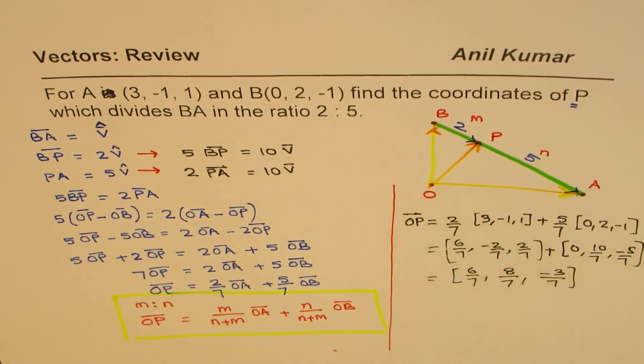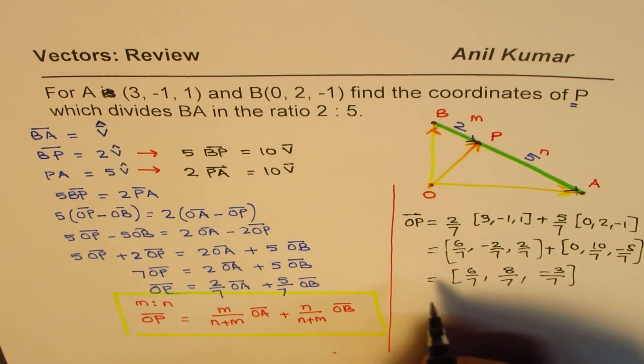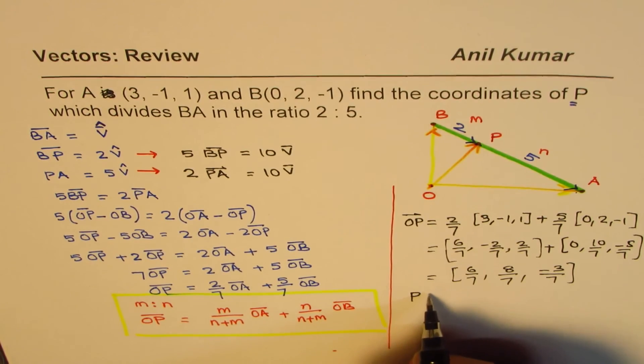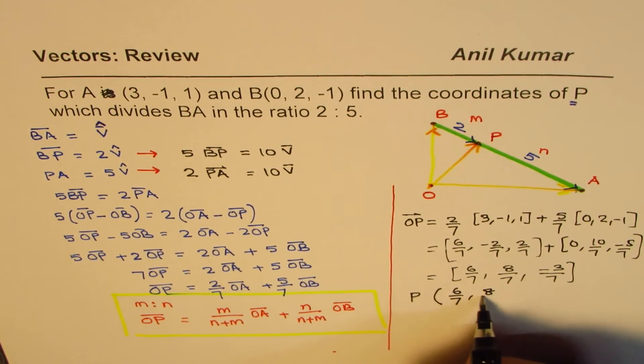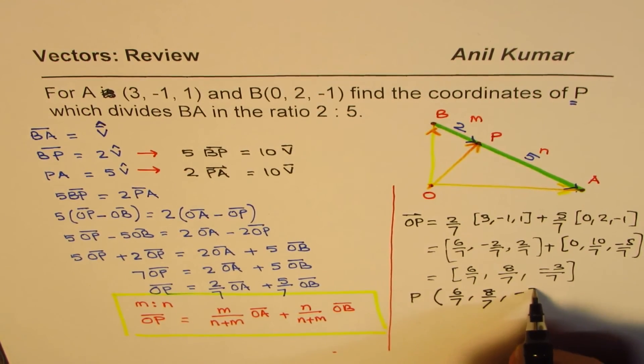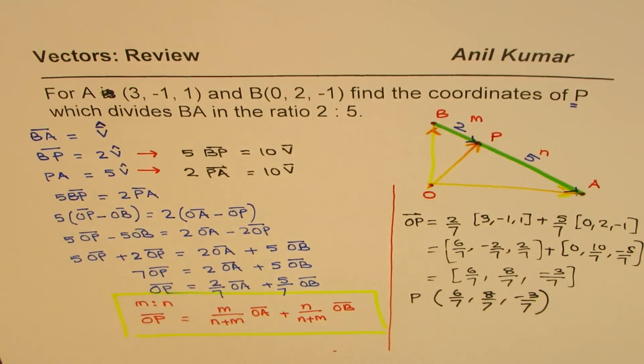So now we know the position vector, we need to write coordinates, important. So the coordinates P will be (6/7, 8/7, -3/7). So that is how you get your answer.